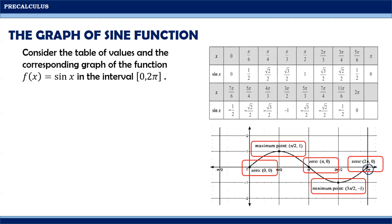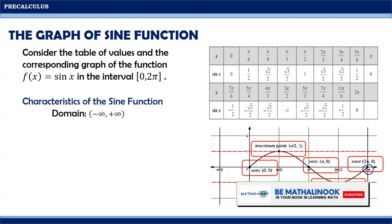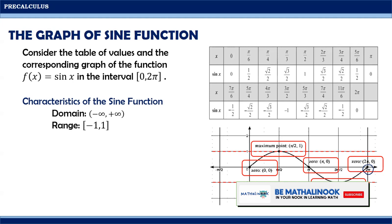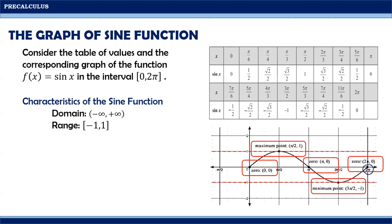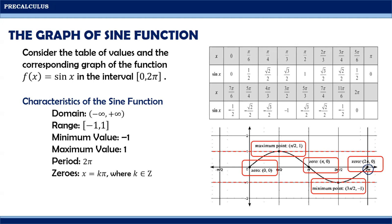The amplitude of the sine function is 1, since one-half the distance between the maximum point and the minimum point is 1. Therefore, we can define the characteristics of the graph of the sine function as follows: the domain is from negative infinity to positive infinity; the range is from -1 to 1; the minimum value is -1 and the maximum value is 1; the period is 2π; and the zeros are x = kπ, where k is an integer.